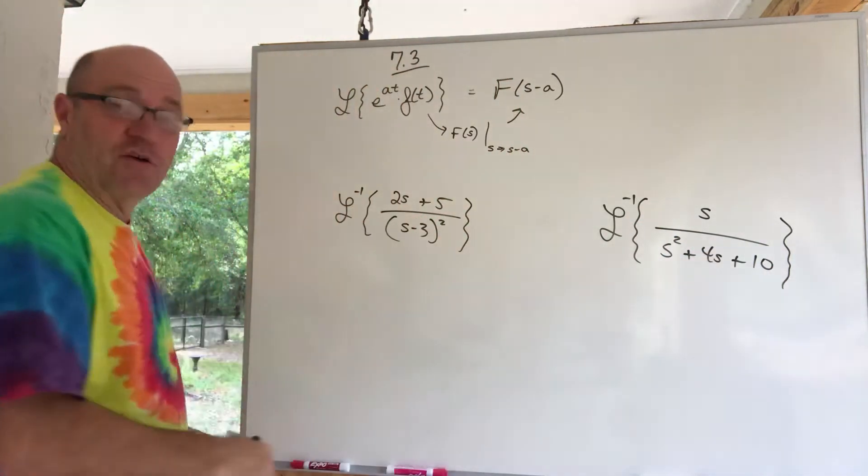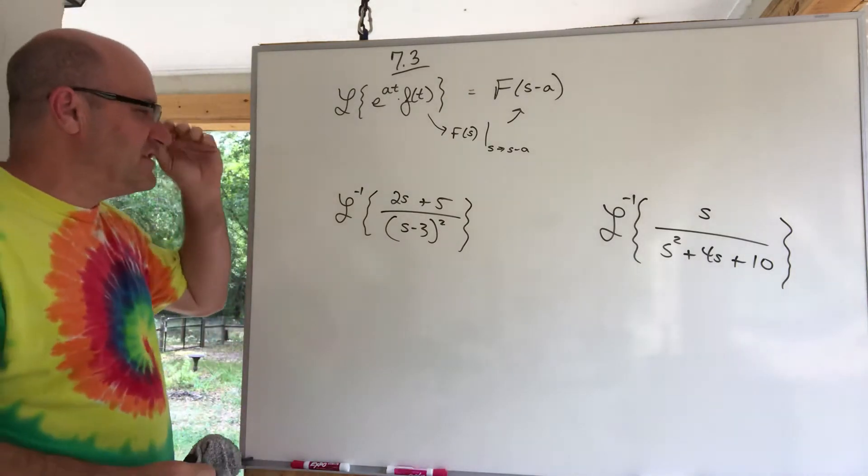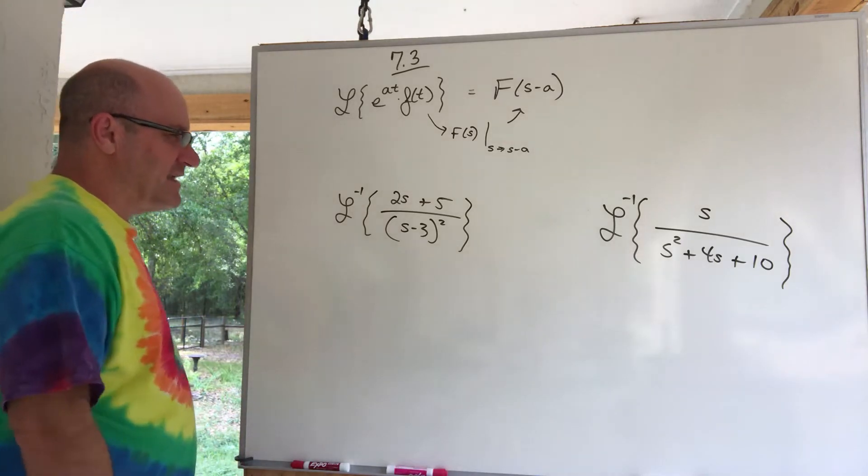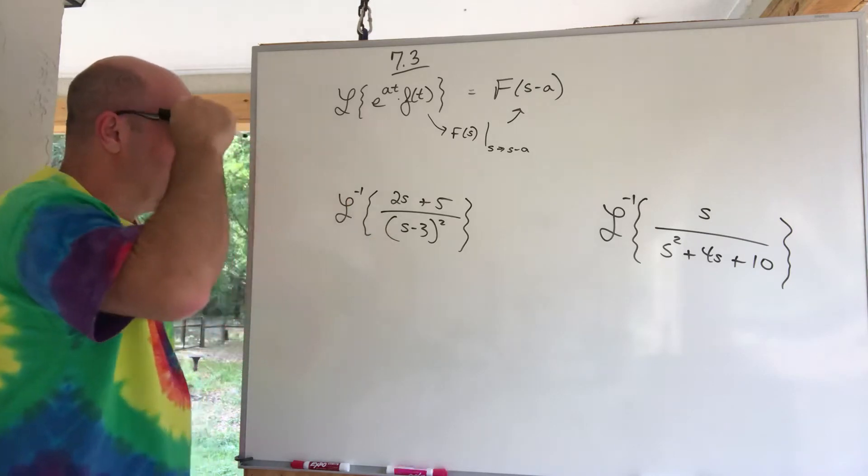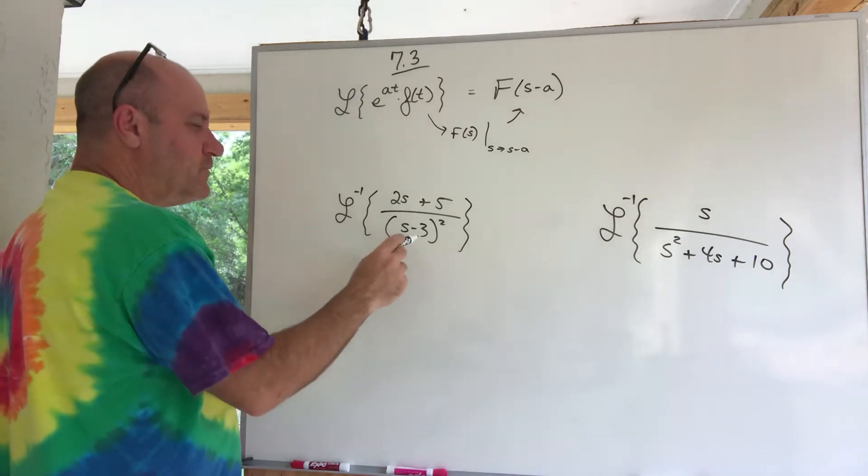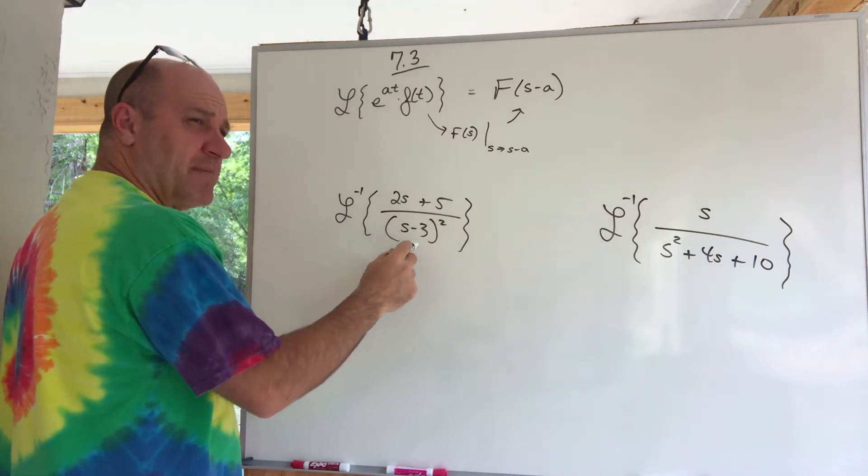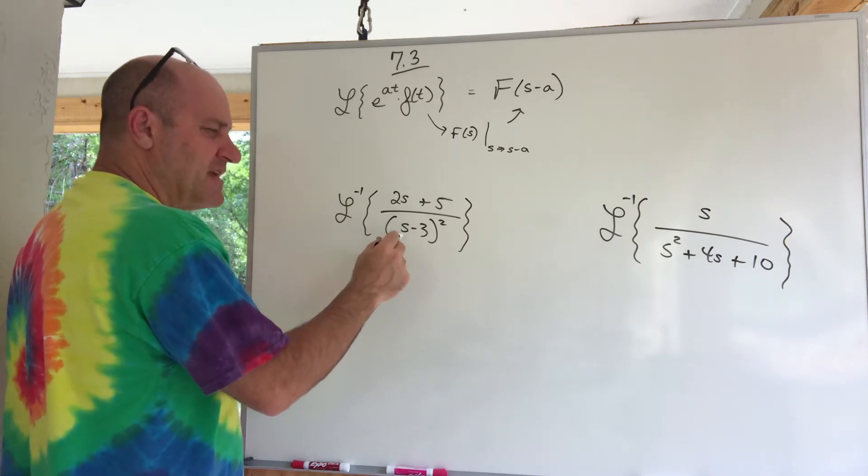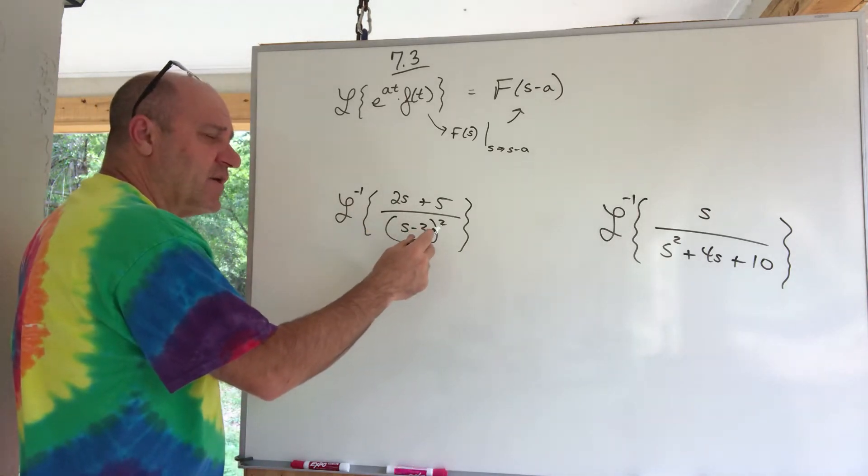So, if I was to go try to look these up, they're not really there. I've got to kind of understand. I've got to try to understand what's going on. Let's see here. Yeah, these are tricky. You know, with this s minus 3 squared in the bottom, that's like a t. I think that's a t. But because it's not an s squared, it's an s minus, then it's an e to the at.